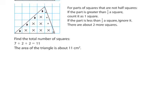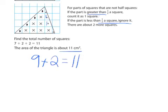And then I would continue with parts of the square that are not half but are still greater than a half, I could count as one. Parts that are less than a half I could ignore. So I'm going to add this one, and this is a little bit more than half, I'm going to add this one. So that's nine plus two more, totaling 11 as my estimate for the area of this triangle.